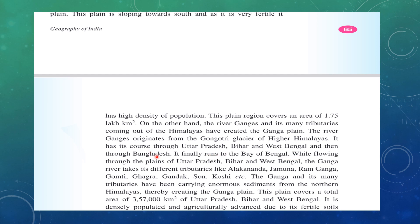In Bangladesh, you must remember, the Ganga meets the Brahmaputra river. While flowing through the plains of Uttar Pradesh, Bihar, and West Bengal, many tributaries join the Ganga. The main tributaries of the Ganga are: Alaknanda, Yamuna, Ram Ganga, Gomti, Kosi, Gandak, Son, and Koshi river.